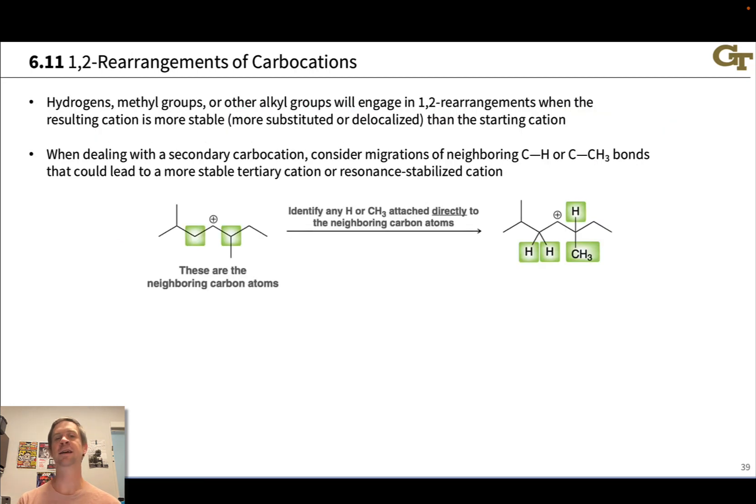Carbocations are highly susceptible to 1,2-rearrangements, which shift the position of positive charge. This is particularly true when the migrating group is relatively small, hydrogens, methyl groups, although other alkyl groups can also do this. And it occurs when the product cation is more stable than the reactant cation. So this is common for secondary carbocations, which can form in organic reaction mechanisms, but quite frequently rearrange if the structural conditions are right.